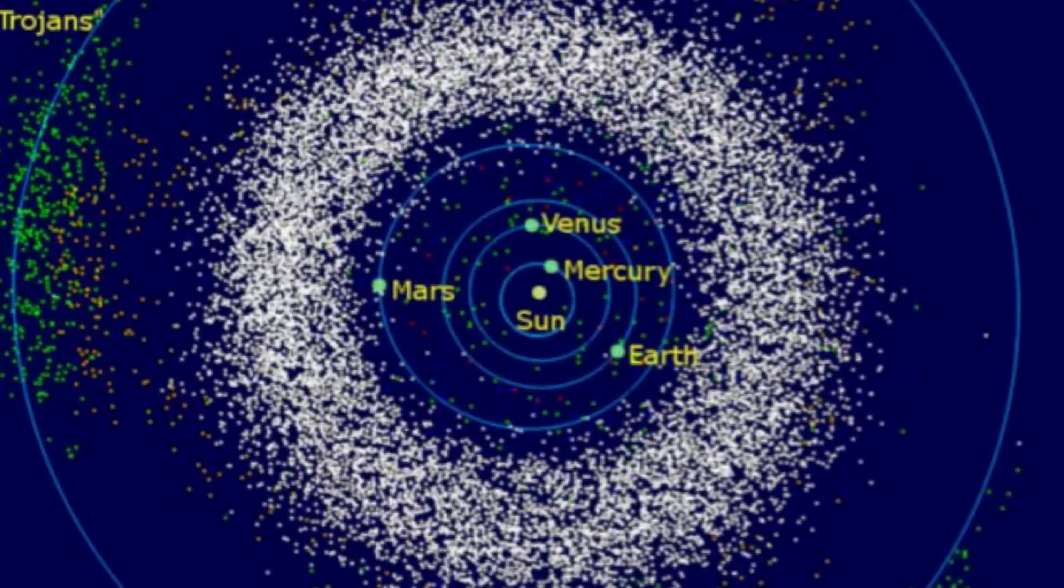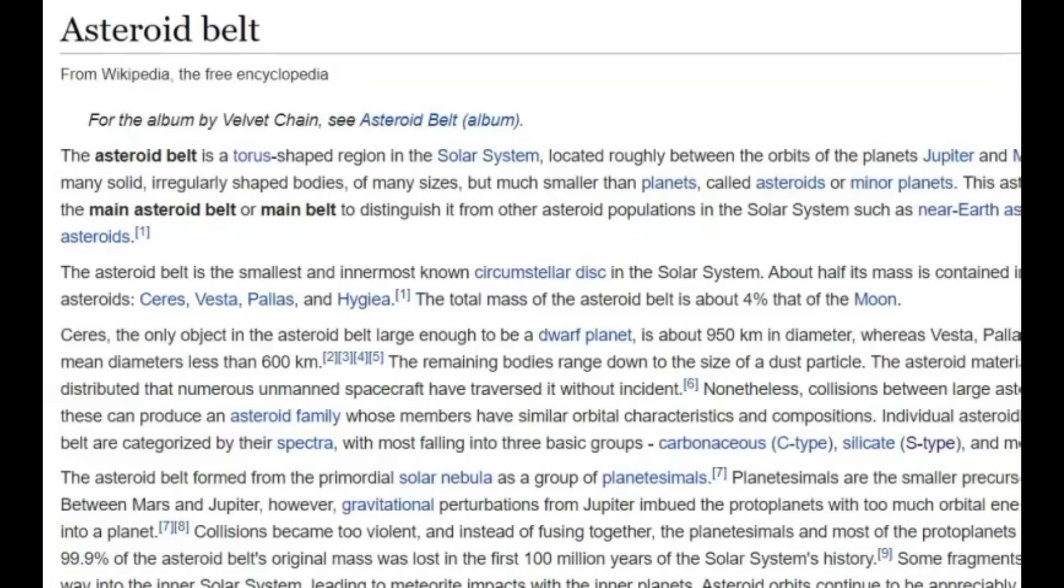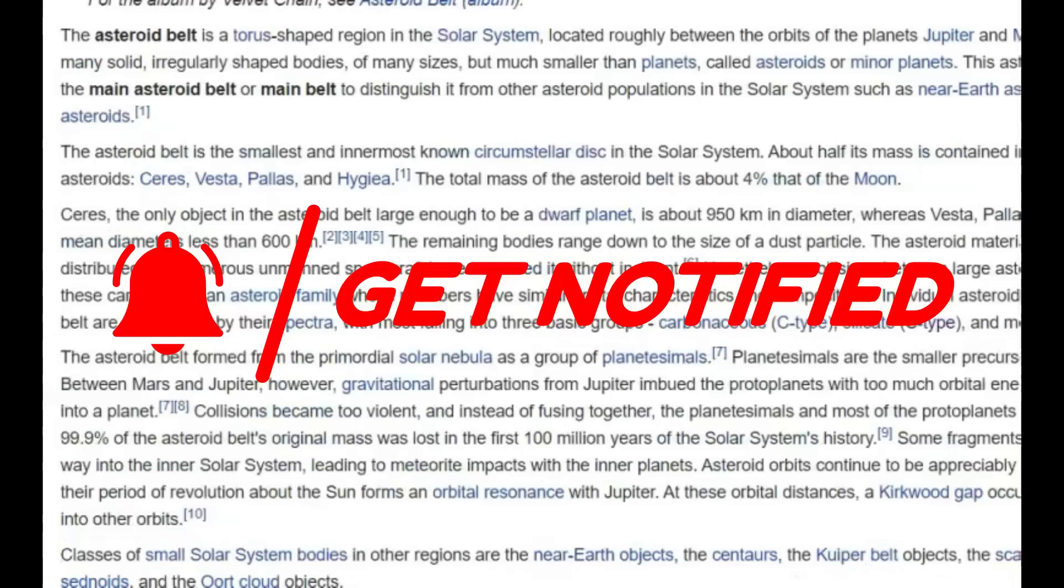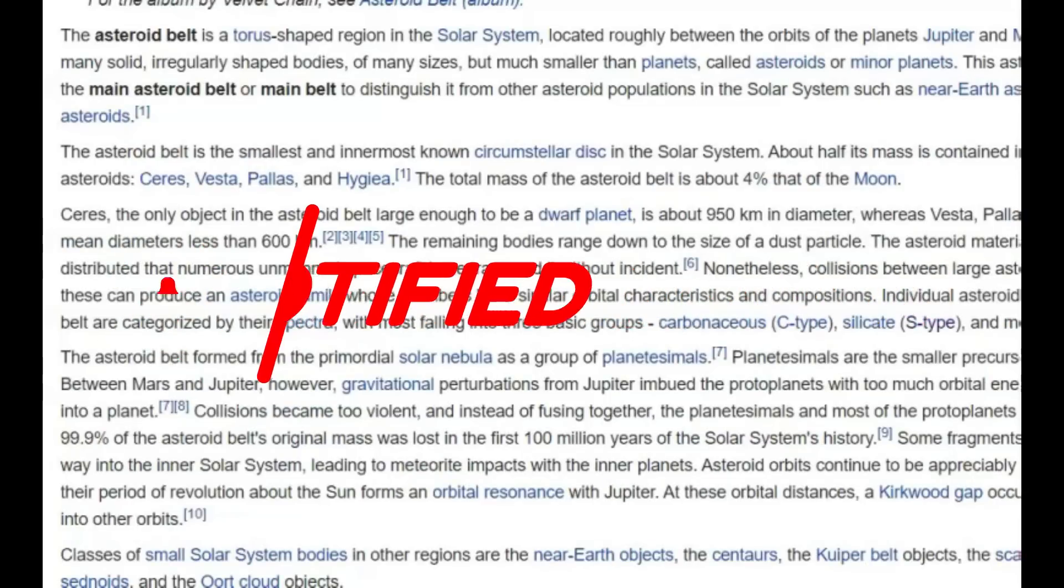It came from the asteroid belt. That is an area of asteroids that circulate between Jupiter and Mars. The asteroid belt contains a great many irregular shaped bodies. The gravitation of Jupiter often throws many of these asteroids in our direction.